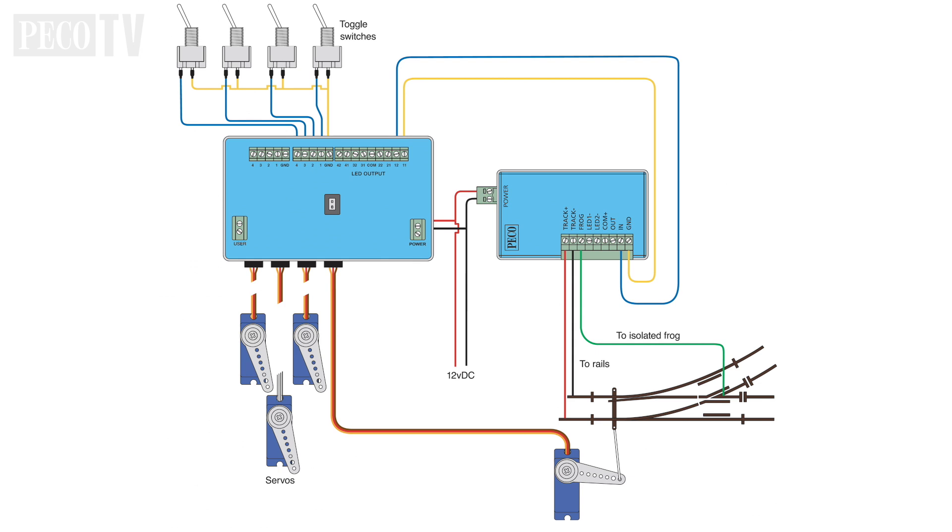We recommend the PL 202 power supply unit. This can be shared with the smart switch system as shown. Please note DCC track voltage will not power the smart frog. You must use a clean DC 12 volt feed to power the device.